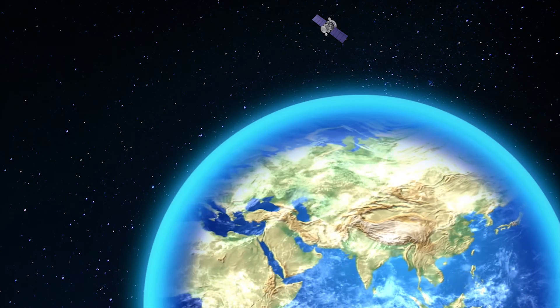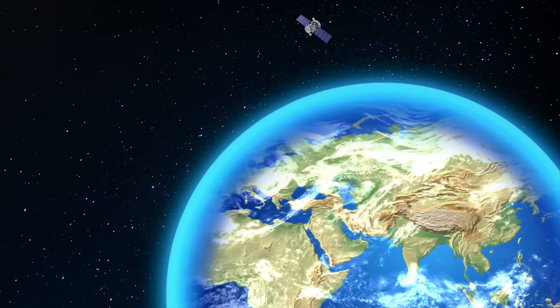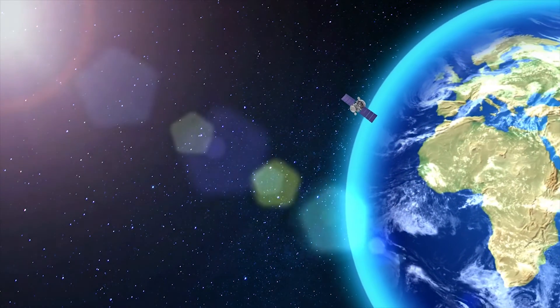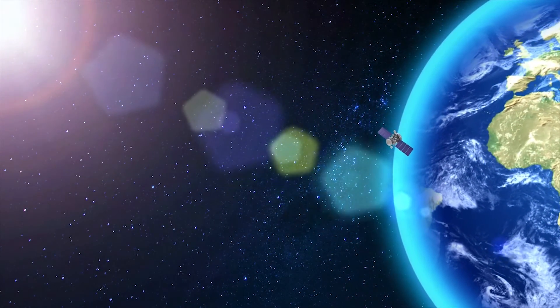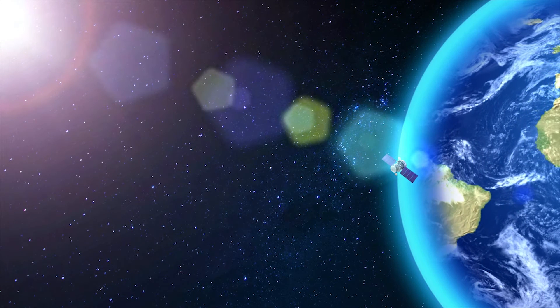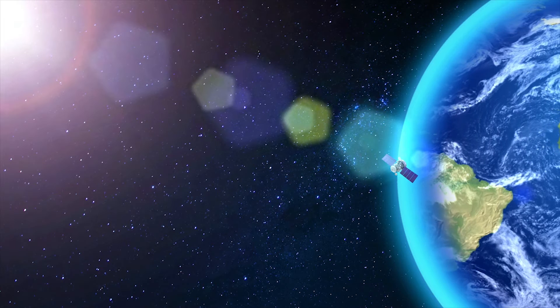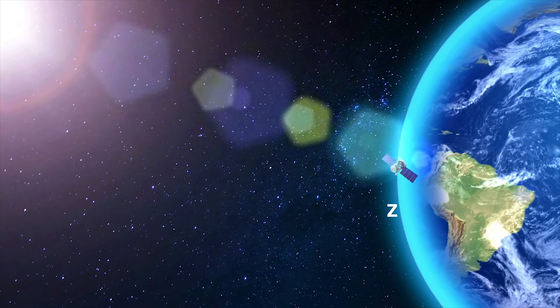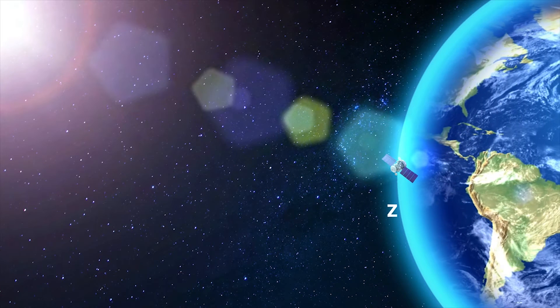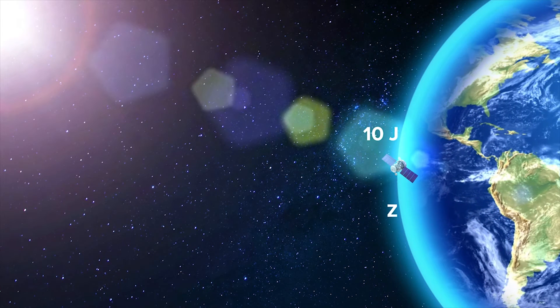Let us put some numbers to the concept. The diagram illustrates an object, in this case an artificial satellite, that possesses gravitational potential energy. On the surface of the Earth, at point Z, close to the centre of mass, let us say that the object possesses 10 joules of gravitational potential energy.